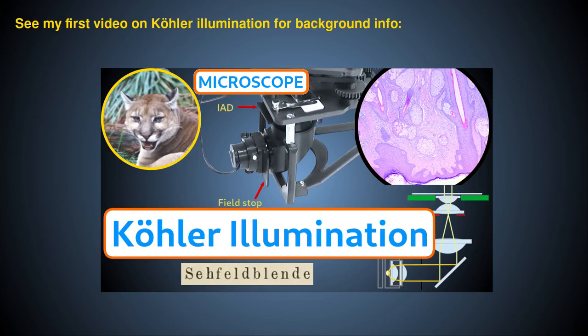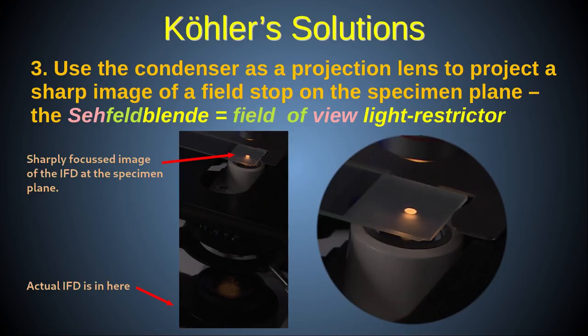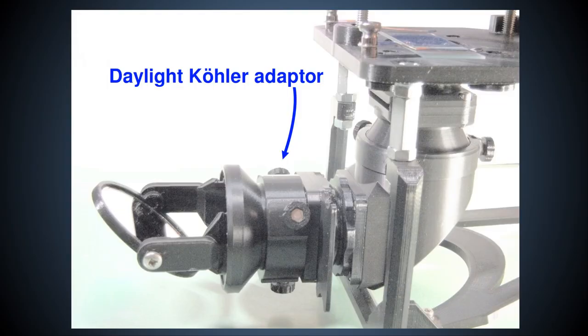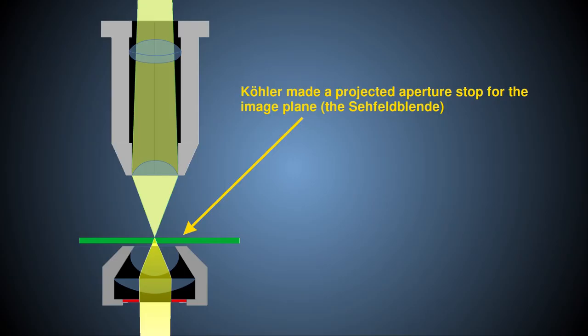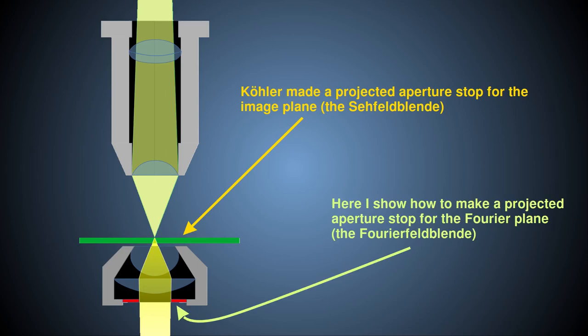In my previous video on Köhler illumination, I described Köhler's methods and his reasons for coming up with them. In this video, I'll show you how you can power the Puma Köhler illuminator with daylight, and I'll describe an extension to Köhler illumination, which I call the Fourierfeldblende, that enables some advanced aperture shaping techniques.